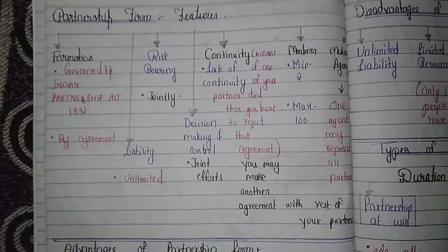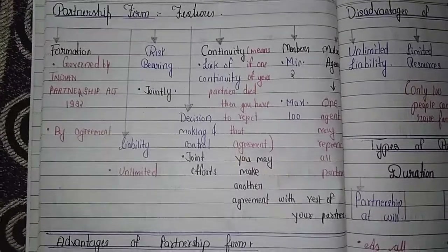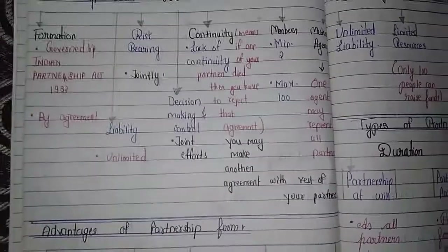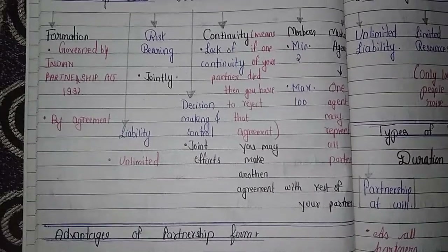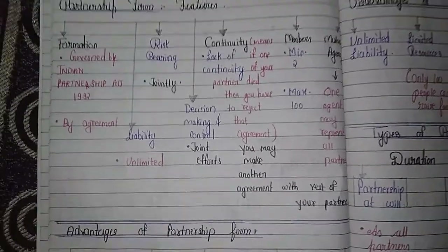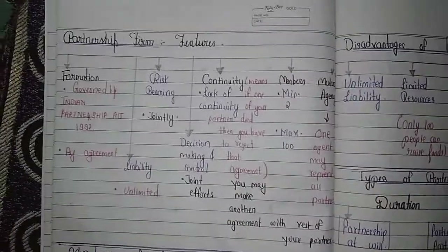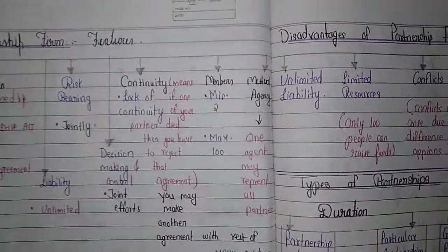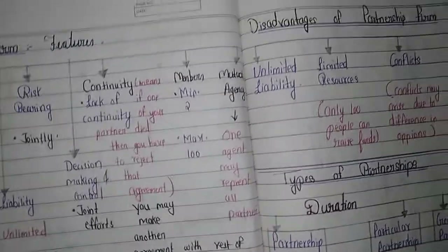Regarding continuity, in a partnership firm there is a lack of continuity — if one of your partners dies, that agreement will be dissolved, and if you want to continue the business you have to make another agreement. In a partnership firm there are a minimum of 2 required members and a maximum of 100 members. Mutual agency means one member can represent all partners.